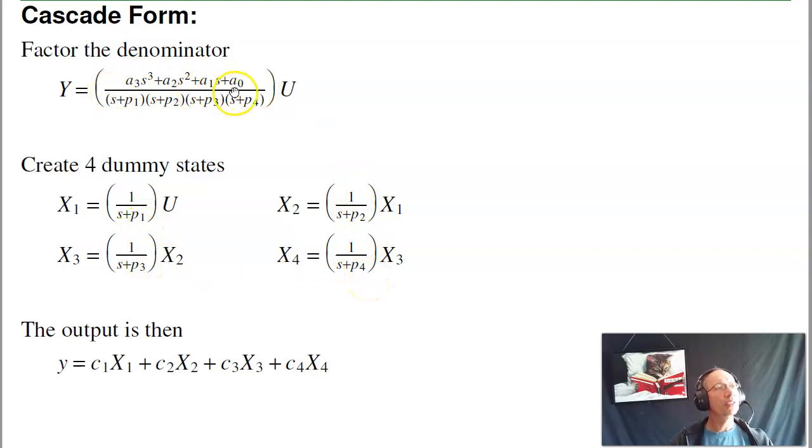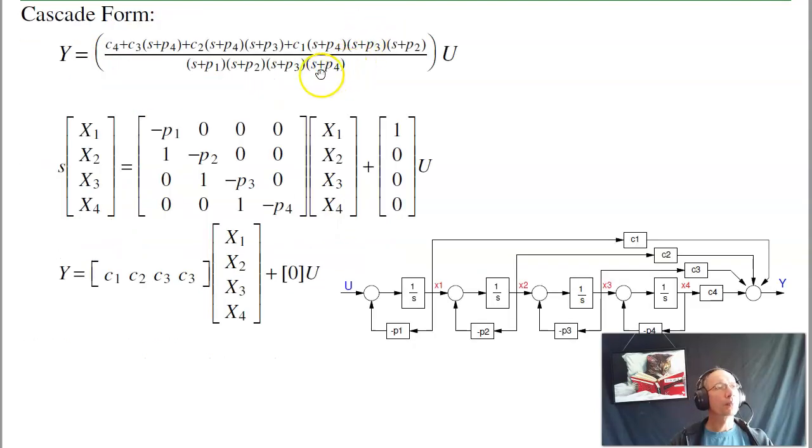To get the numerator, I've got c4 times x4, which has all four poles. c3 just sees three poles. Or c3 has four poles times s plus p4. c2 just sees two poles. Put this all together and I can implement any polynomial I want. Essentially c1 is the s cubed term. This is the generic system I can implement using cascade form. Much better numerical properties.